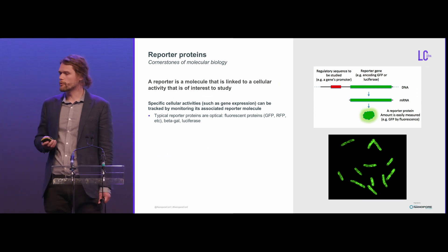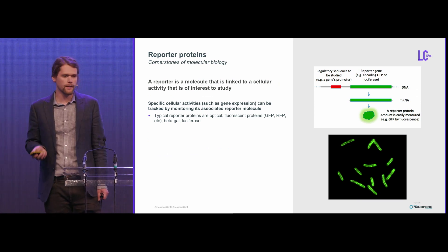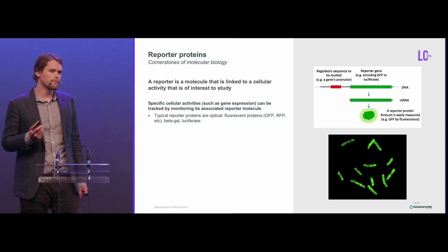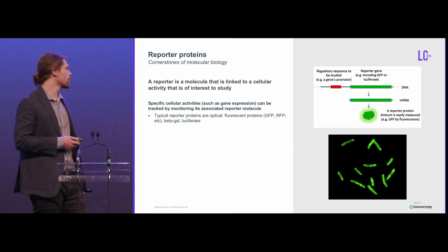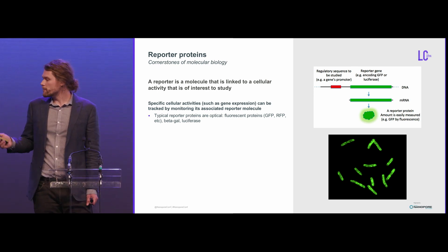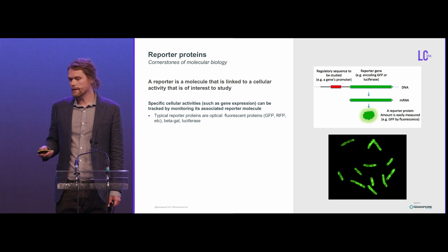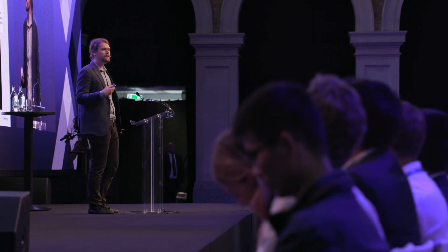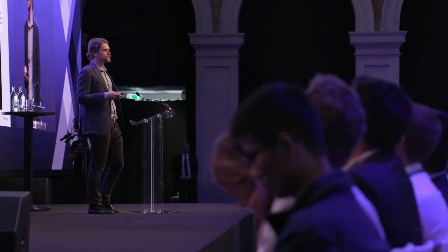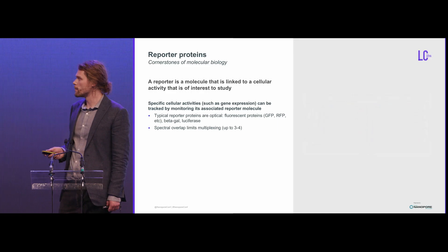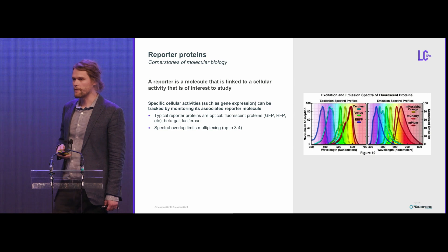Think of classical reporter proteins that can be linked to specific cellular activities — for instance, gene expression. The most popular ones are GFP, RFP, beta-gal, and luciferase. But you'll notice all of these are optically-based readouts. They are amazing in what you can measure, but they are limited in the number of different reporters you can use in a single system if you're interested in detecting multiple things, because of spectral overlap of their signals.